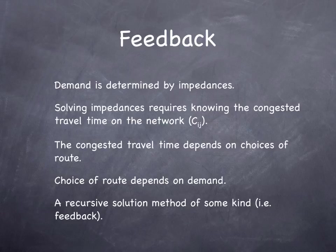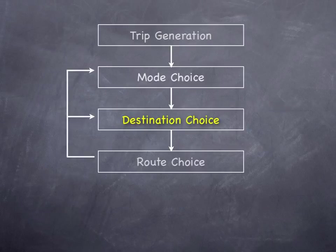Destination choice cannot be solved in isolation from other model components — it requires we know travel times. However, estimates of travel time require knowing travel demand. This system of models needs to be solved iteratively in practice, with some kind of feedback and convergence mechanism.